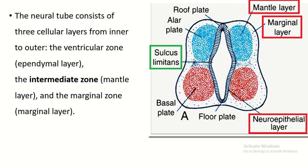Regarding the histology of the neural tube: the neural tube is formed by stratified columnar epithelium. These cells are mitotically active and new neurons are produced from this layer, known as neuroblasts. These neuroblasts migrate outward and form a layer known as the mantle layer. The processes of the newly formed neuroblasts form another layer called the marginal layer.